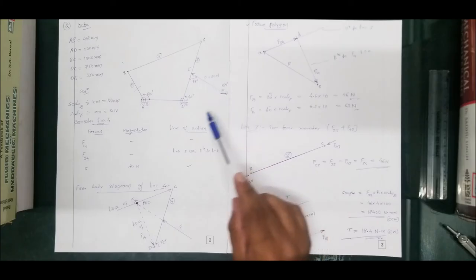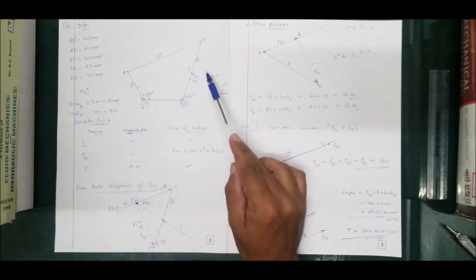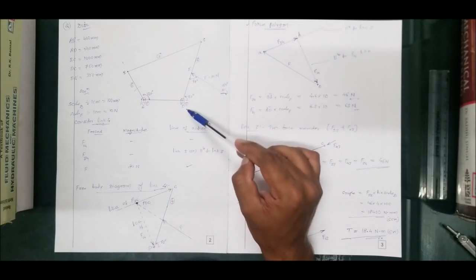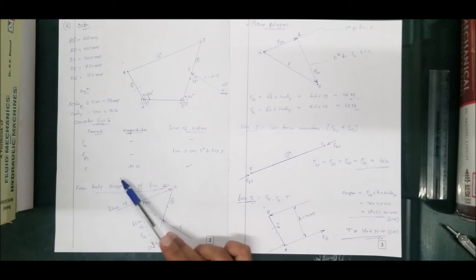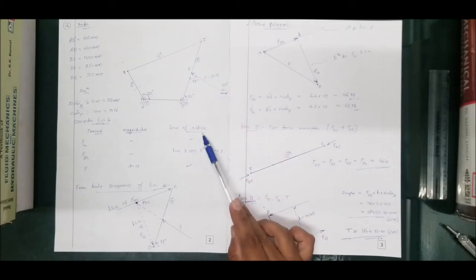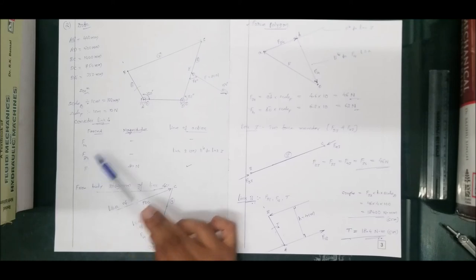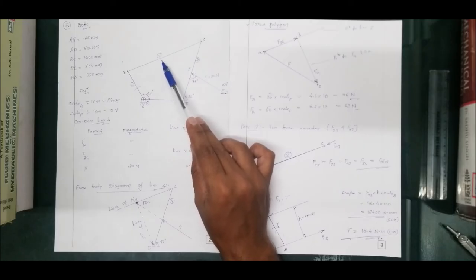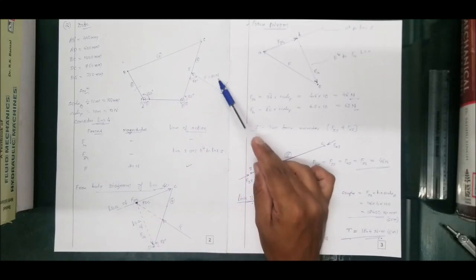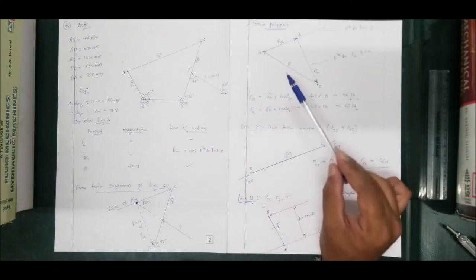Always start the problem from the known point — here force F is known and acts on link 4, so start with link 4. Link 4 has three forces: F14, F34, and F. F14's line of action is unknown; F34's line of action is parallel to link 3 (two-force member); F's line of action is given. For a three-force member: Step 1 is free body diagram; Step 2 is force polygon.